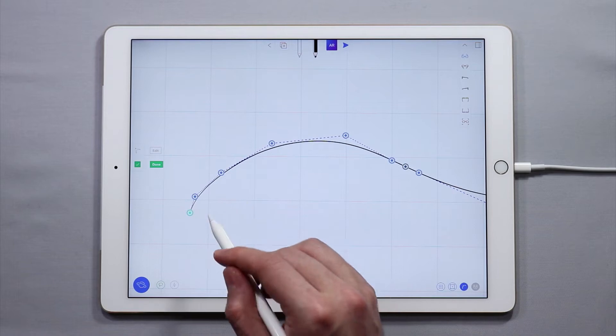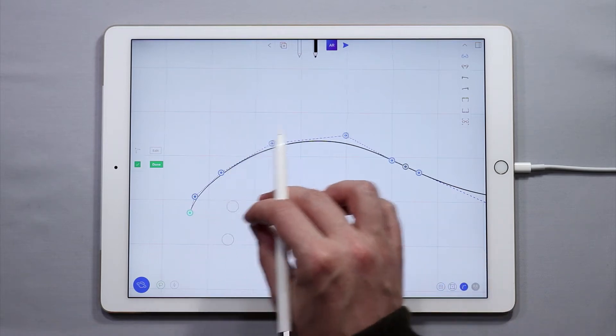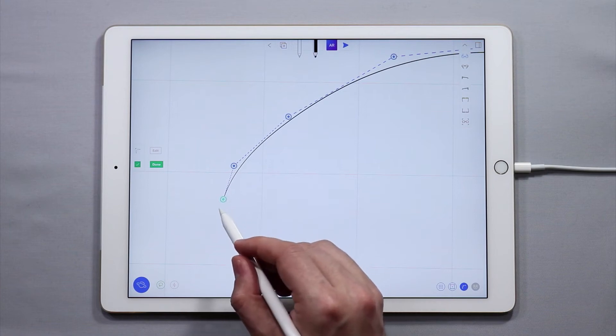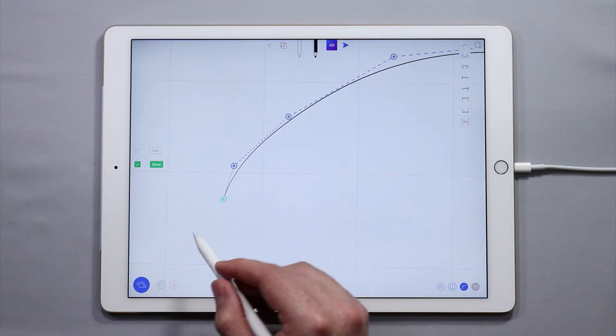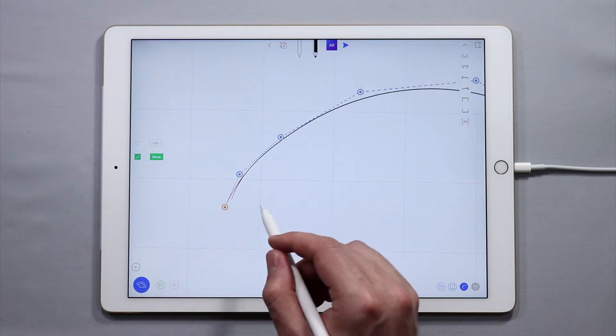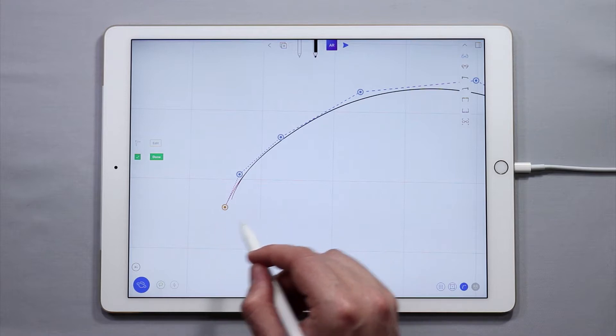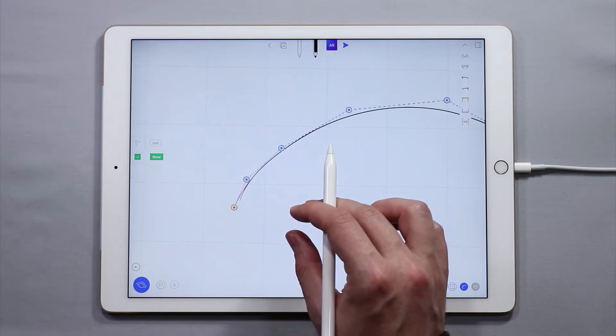You'll see that there are a couple different colors of the control points so let's talk about that. Green represents an endpoint. You can see that at the end of this curve the control point is green. This is useful if you have several curves selected or are in edit mode with several curves you'll know where the end of one curve is and the beginning of another one is.